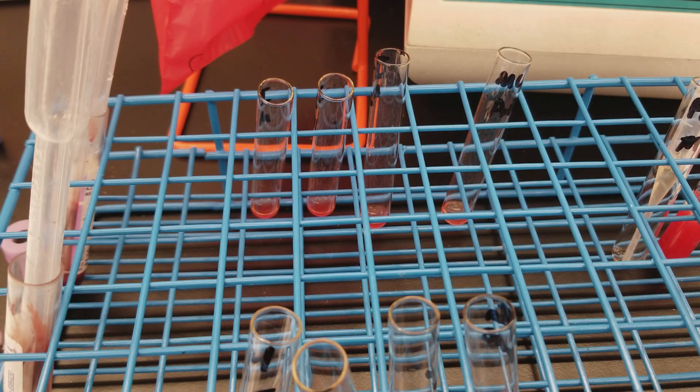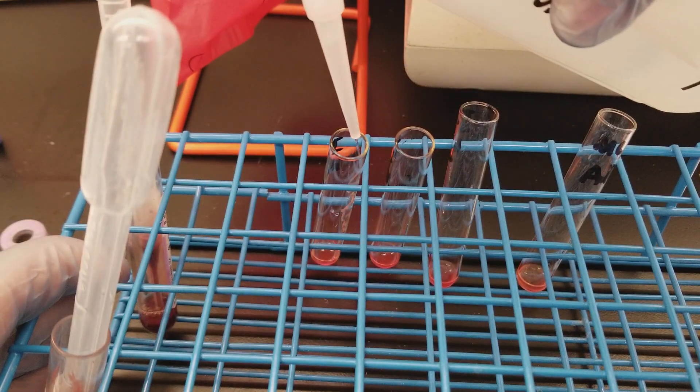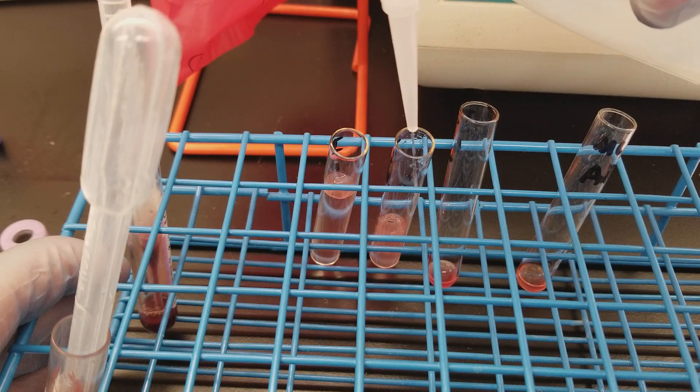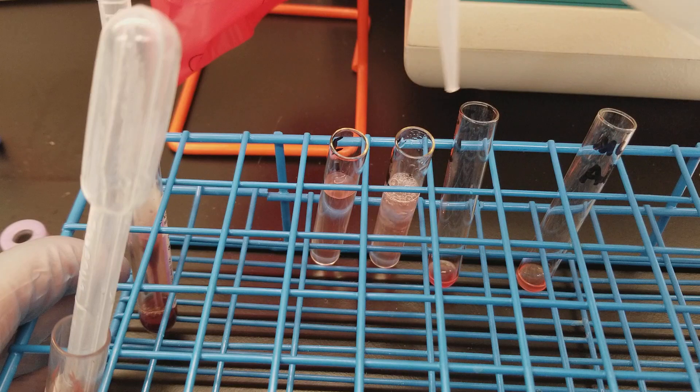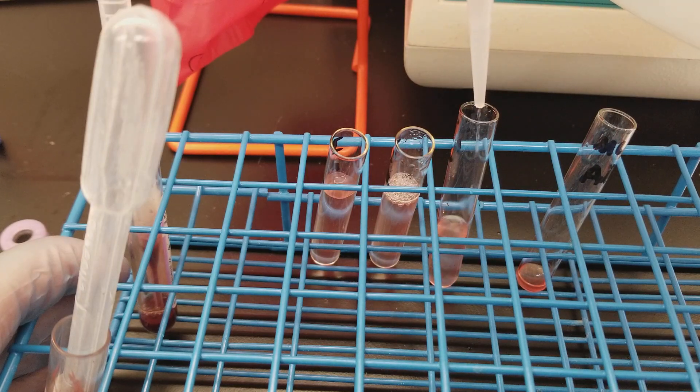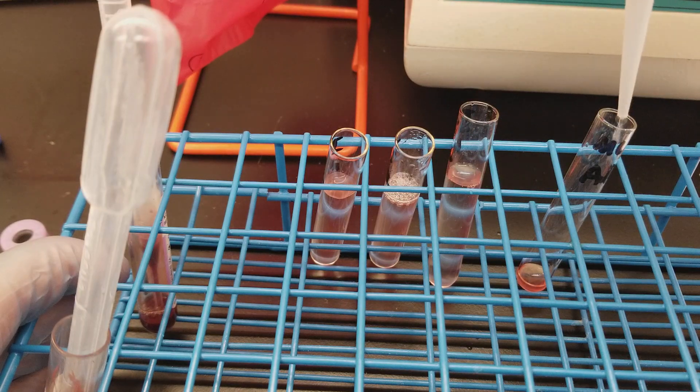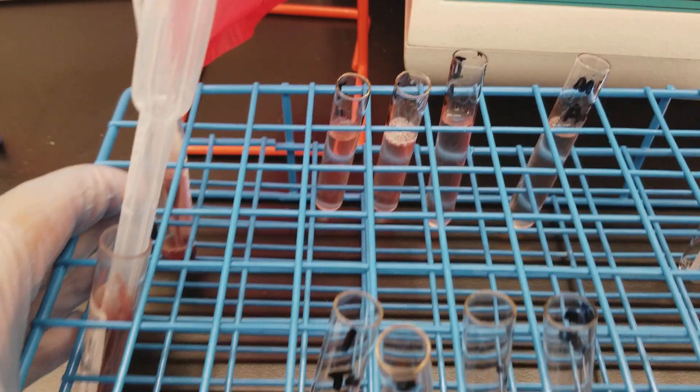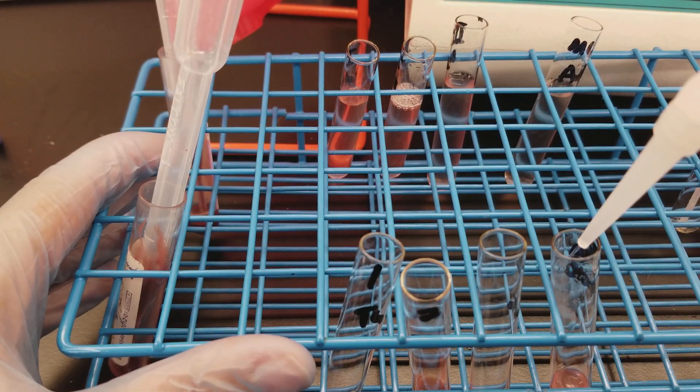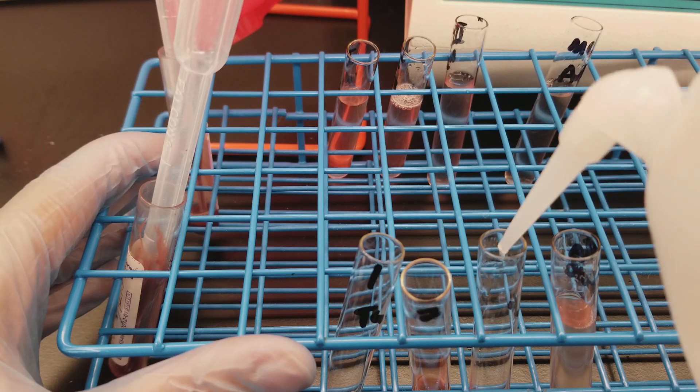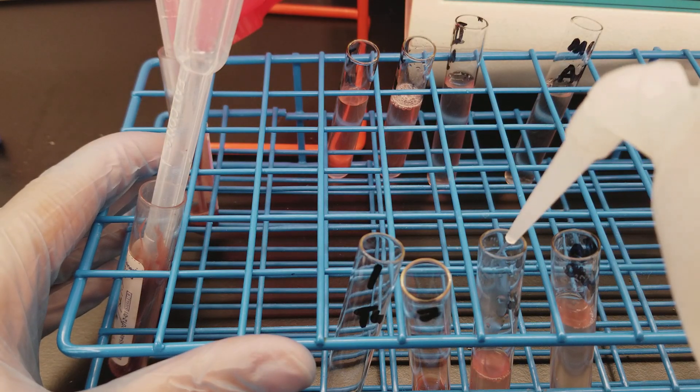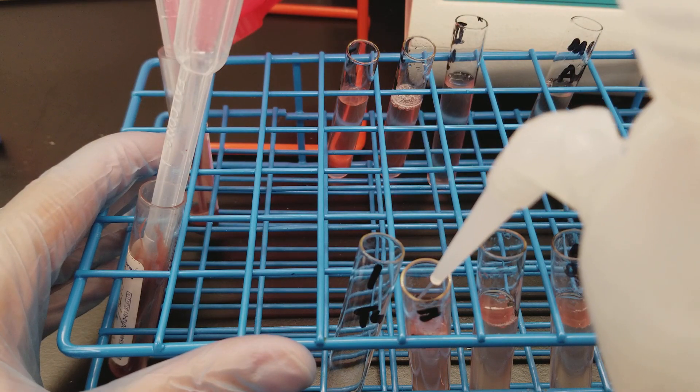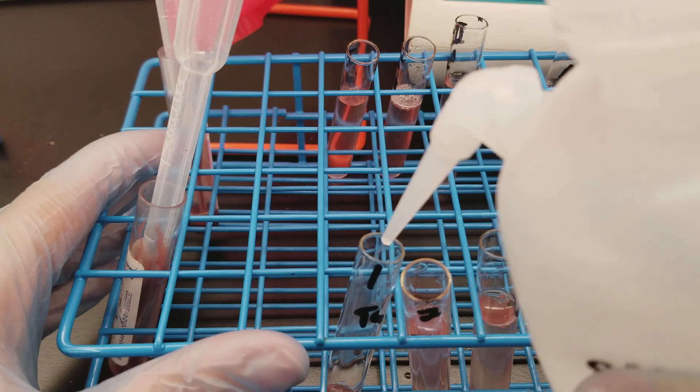So with the wash step, I'm going to add saline three quarters of the way up on each tube and gently re-suspend them. Spin them for 15 seconds. We won't read for agglutination until after we do this process three to four times. So we will wash them by putting saline three quarters of the way up the tube.